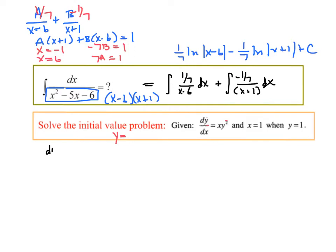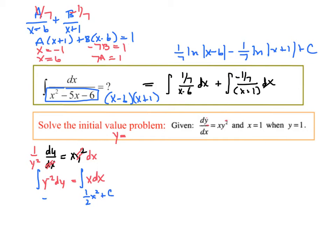dy/dx equals x y squared. I start by multiplying both sides by dx, so the x's are now together. Then I divide both sides by y squared, so the y's are together. Now 1 over y squared I'm going to write as y to the negative second. So we separate, then we integrate. The antiderivative is (1/2)x squared plus C. Here we get negative y to the negative first.